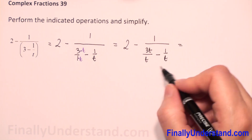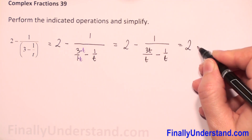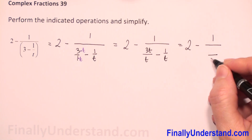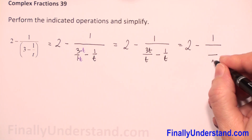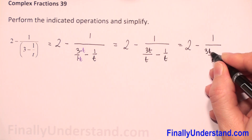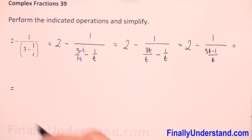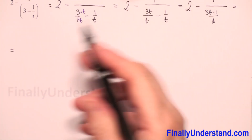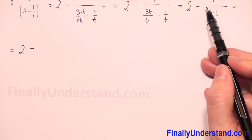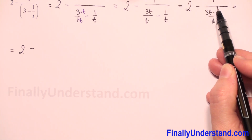We have minus 1 over t. Now when we have the same denominators, we can do the subtraction. We copy 2 minus 1 over, and now we copy the numerator and subtract: we have 3t minus 1. So this is equal. Next we copy 2 minus, and we have here the main fraction bar.